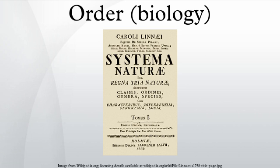There are no hard rules that a taxonomist needs to follow in describing or recognizing an order. Some taxa are accepted almost universally, while others are recognized only rarely. For some groups of organisms, consistent suffixes are used to denote that the rank is an order.